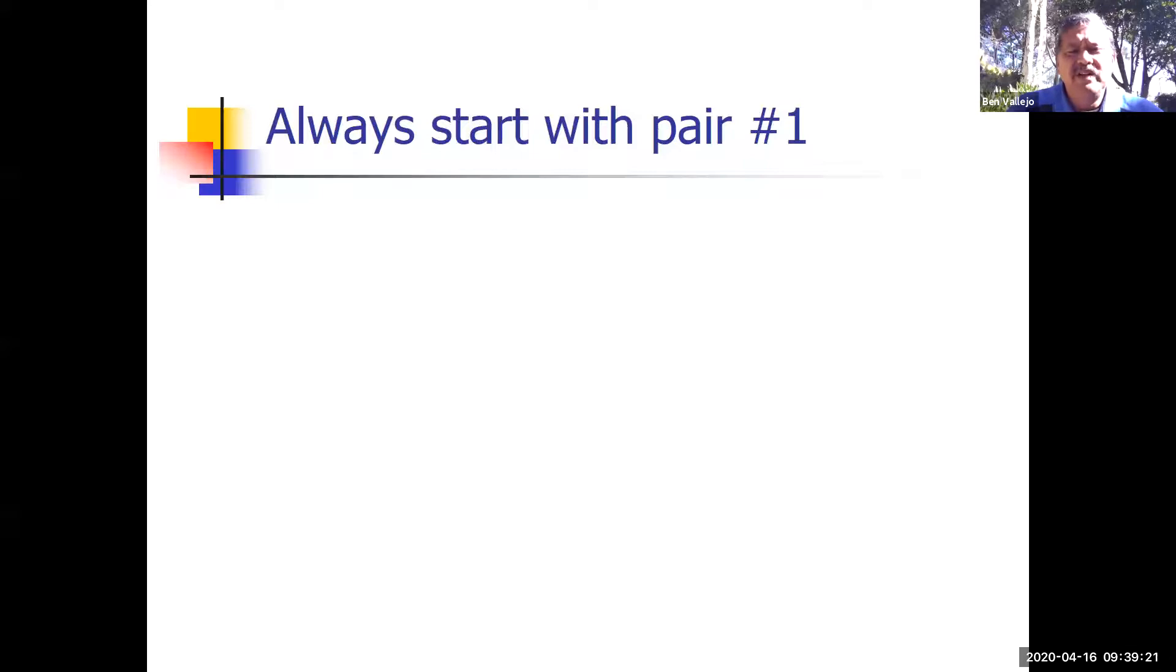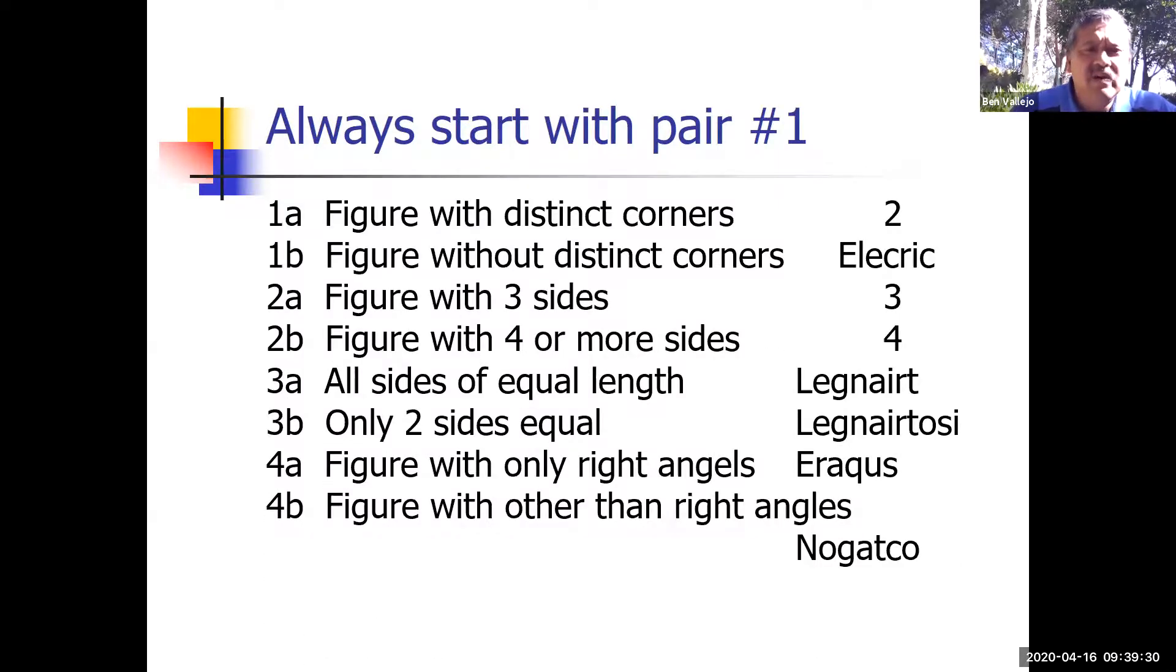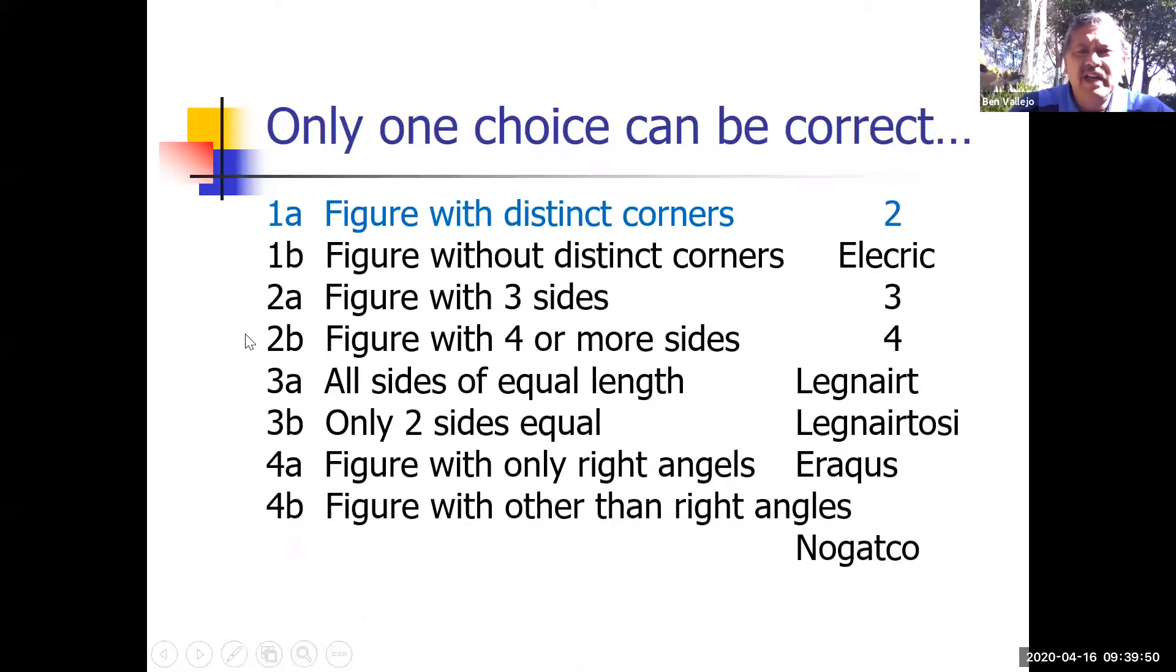When you do the dichotomous key, you always start with the first pair because one is true and one is not. Here's 1a and 1b. For our organism right there, does this guy have any distinct corners? And it does—it has eight of them. So I'm going to go to item number two because I know that 1a is the correct choice.